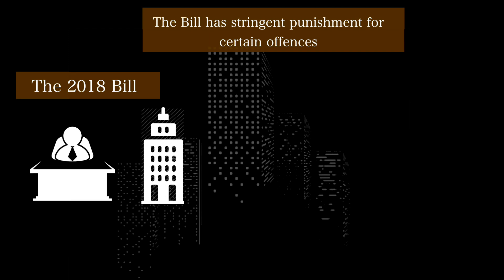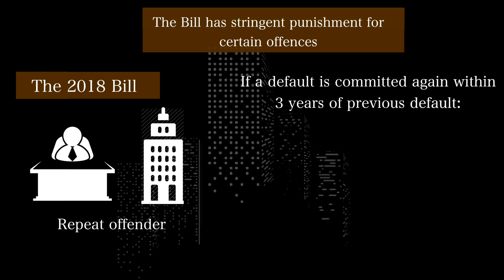The Bill also punishes repeat offenders. If a company or any other person commits a default again within three years of the previous default, the entity will be liable to twice the penalty as provided for such default.